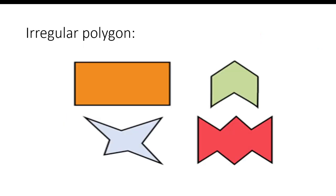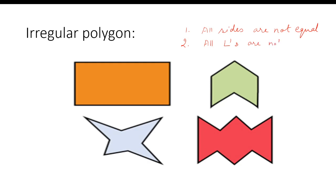Now here we have irregular polygons. You can see these are irregular. Why are these irregular polygons? Here you can see all sides are not equal — that is the first point in an irregular polygon. The second point is angles: all angles are not equal.